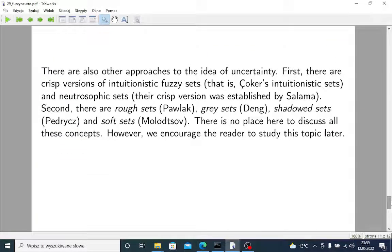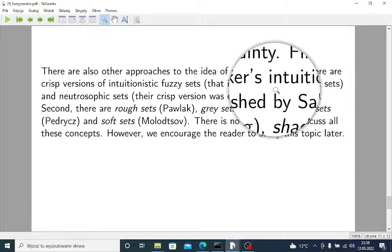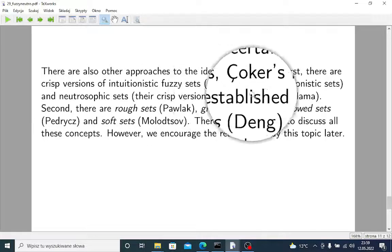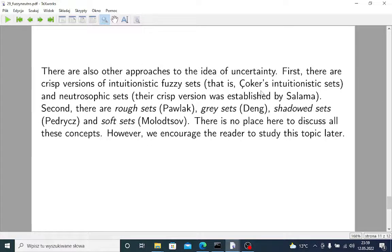And you should know that there are also other approaches to the whole idea of uncertainty. First, there are crisp versions of intuitionistic fuzzy sets and even on our channel you can find videos about Choquet's intuitionistic sets. And there are also crisp neutrosophic sets, and this was established by Salama from Egypt. And moreover, there are theories of rough sets, gray sets, shadowed sets of Pedrycz and soft sets of Molodtsov. There is no place here of course to discuss all of these concepts, but we encourage you to study this topic or those topics later.